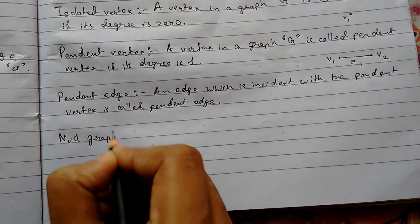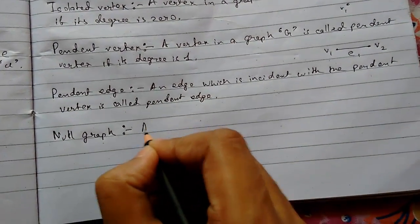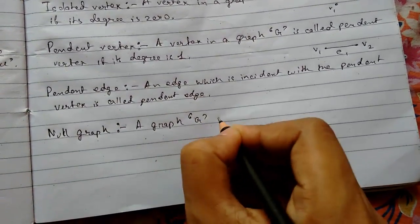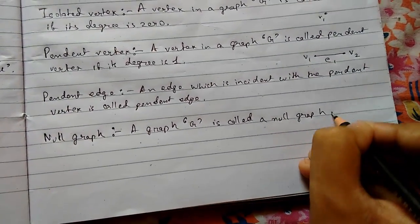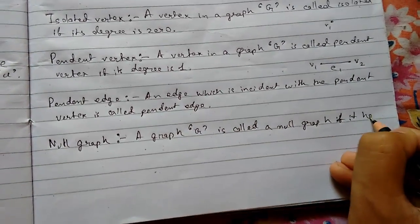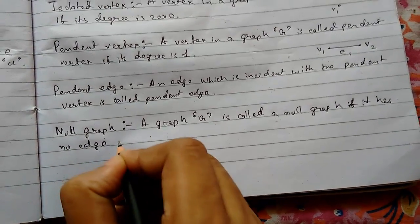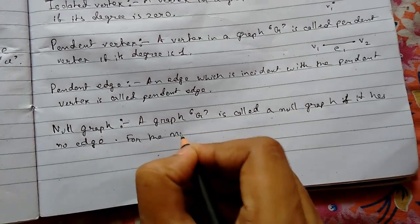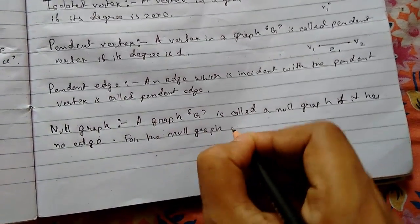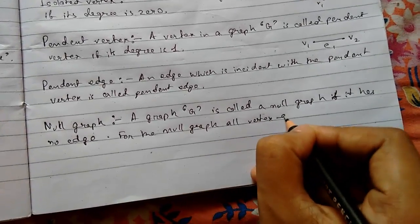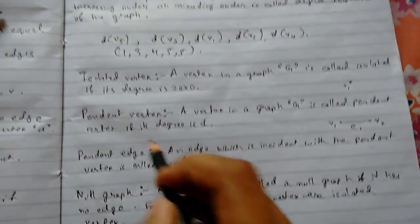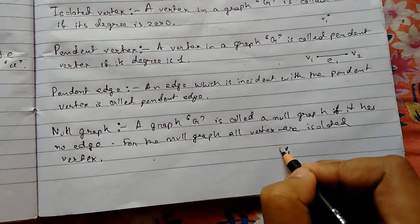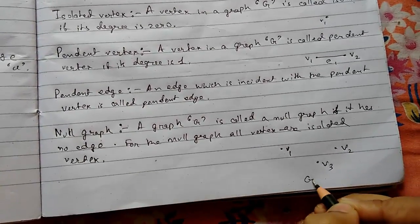Null graph: a graph G is called a null graph if it has no edges. For a null graph, all vertices are isolated vertices. For example, a graph G with vertices V1, V2, and V3 and no edges is a null graph.